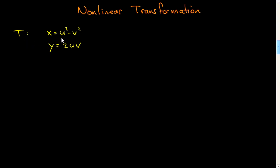So here's the example I've chosen. The transformation, written in terms of component functions, is x equals u squared minus v squared, and y equals 2uv. So it's not a linear transformation. It's nonlinear.